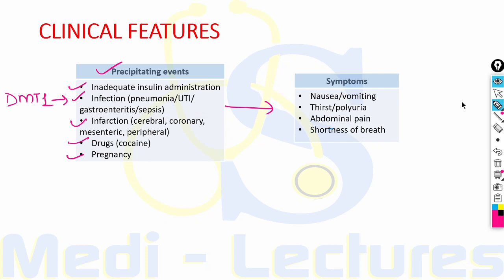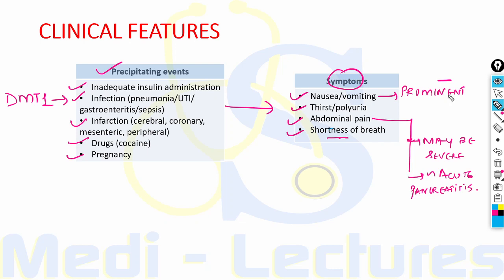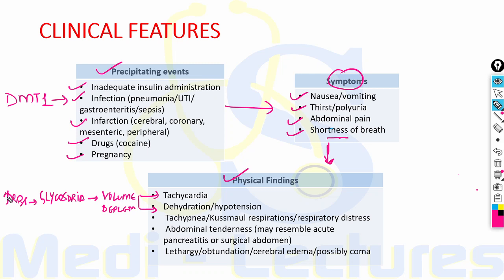When a susceptible patient meets the precipitating events and develops DKA, the symptoms are nausea or vomiting, thirst, polyuria, abdominal pain, and shortness of breath. Nausea and vomiting is a very prominent symptom in DKA, and the presence of nausea or vomiting in a patient with diabetes warrants lab evaluation for DKA.